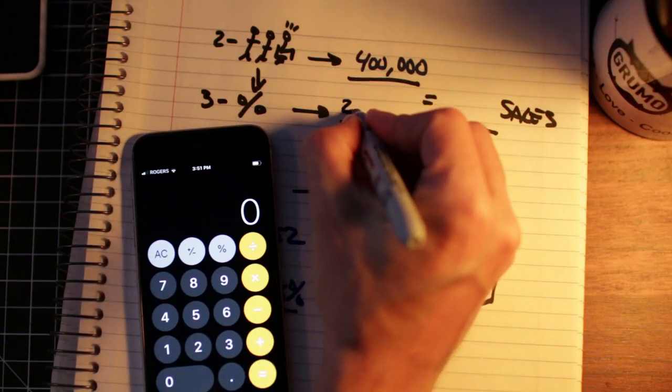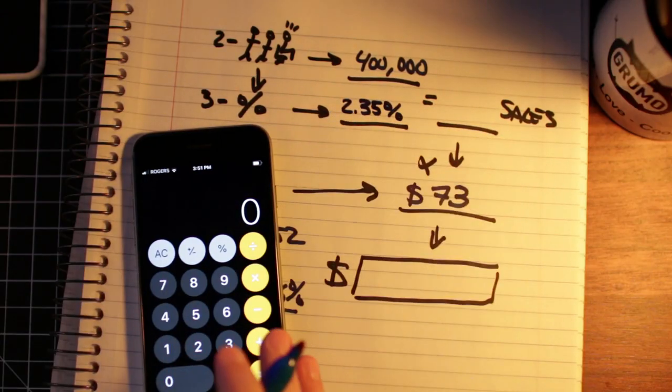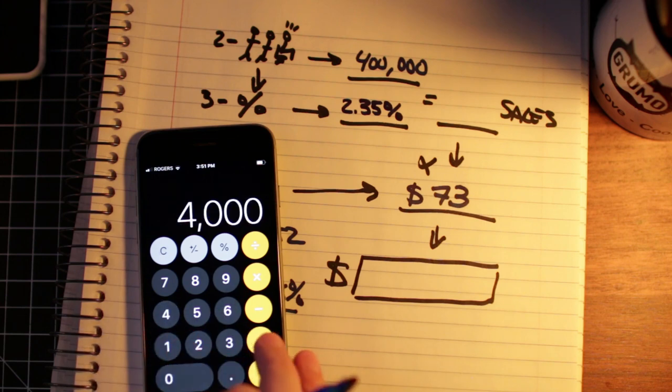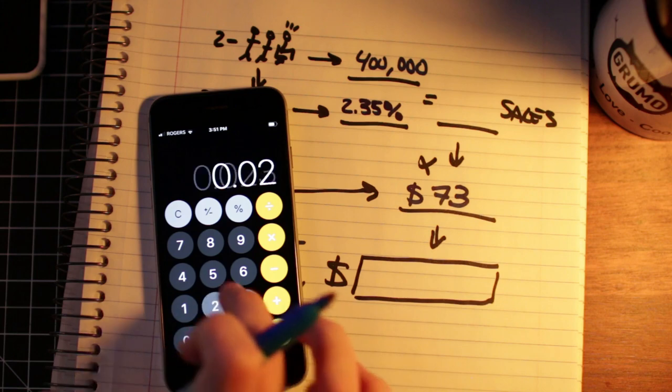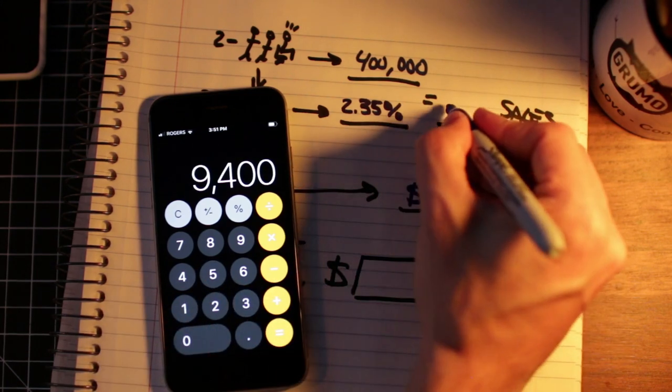With this info, we have all we need to get an estimate of how much money this dirty sales page is generating. So to calculate the total sales per month, we multiply the total visits times the conversion rate. At the conservative 2.35% conversion rate, we get 9,400 sales per month. That's a lot of poopy bottles these guys are selling.